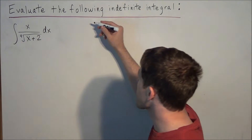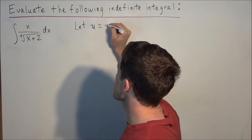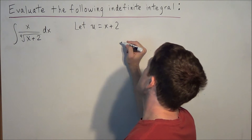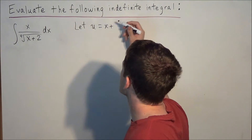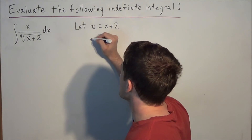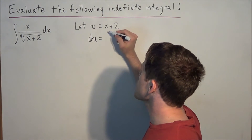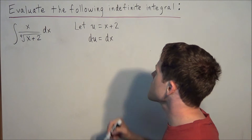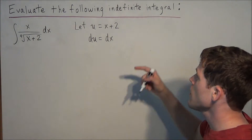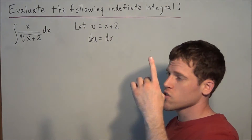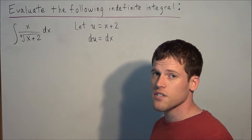To start this problem we're going to let u equal x plus 2. We take the derivative of both sides and we'll have du equal to dx. The derivative of x plus 2 is 1 because the derivative of x is 1 and the derivative of 2 is 0. So we have du equal to dx.